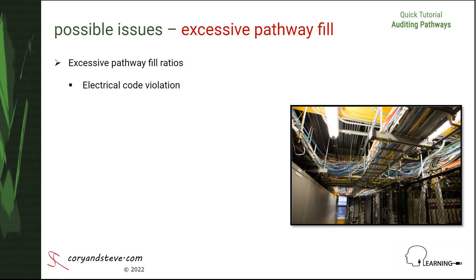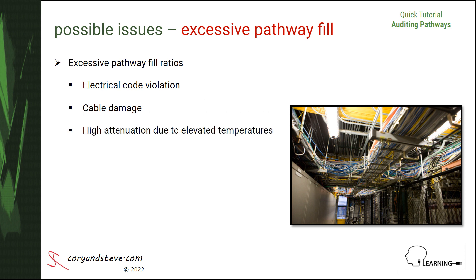A greater than allowable quantity of cables in a pathway can cause cables to be physically damaged or deformed, affecting twisted pair geometry within copper cables and stressing the fiber strands in optical fiber cables. The extra cables can also lead to excessive heat buildup in cases where Power over Ethernet or PoE is used to simultaneously carry both power and data. When this happens, the likelihood of network errors or link failure increases due to elevated signal attenuation caused by the excess heat.